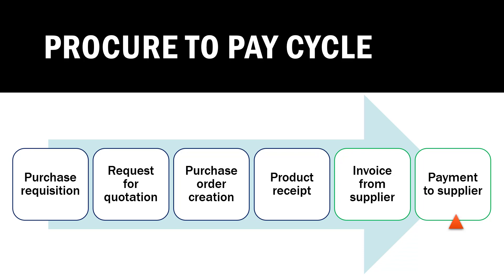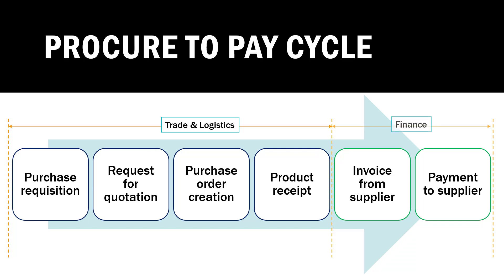These are the steps involved in the Procure to Pay cycle. The first four steps — from purchase requisition to product receipt — come under trade and logistics, that is the supply chain management process. The last two steps — receiving the invoice from the supplier and making payment — come under the financial process. Together, trade and logistics and finance create the Procure to Pay cycle.